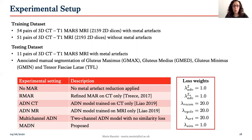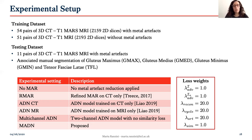In order to assess the impact of our innovations, we performed metal artifact reduction in different settings. As a baseline, we considered the original images with no correction. We also performed the traditional MAR on CT — the refined MAR — which is based on a sinogram completion technique. Then we trained four different deep learning models: ADN-CT trained on CT only, ADN-MR trained on MRI only, the multi-channel ADN with multi-channel input but no similarity loss, and finally the MMADN model with LNCC as a similarity loss.